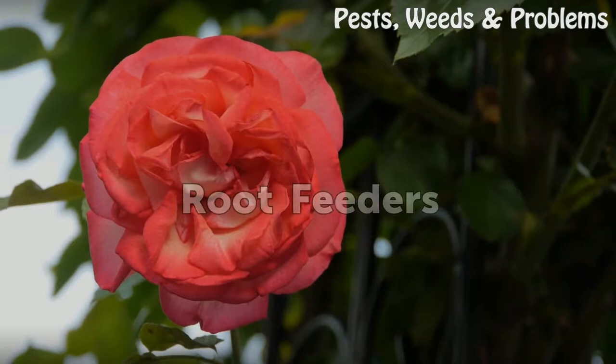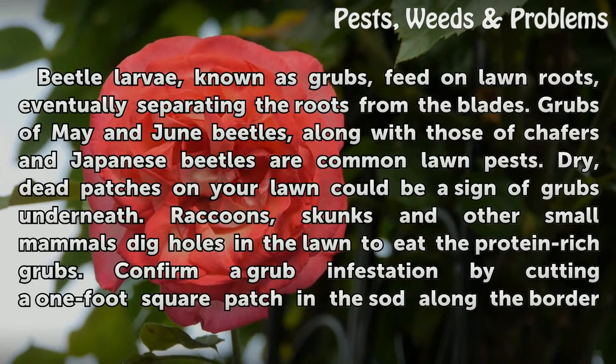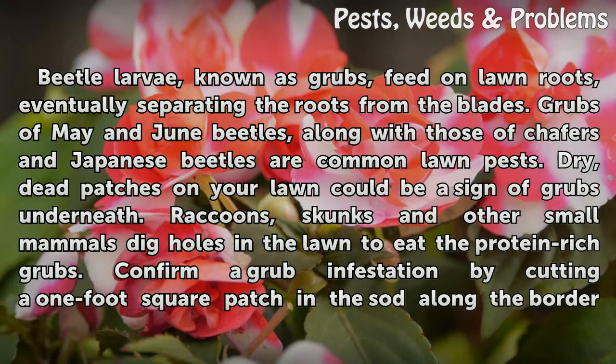Root Feeders. Beetle larvae, known as grubs, feed on lawn roots, eventually separating the roots from the blades. Grubs of May and June beetles, along with those of chafers and Japanese beetles, are common lawn pests. Dry, dead patches on your lawn could be a sign of grubs underneath.